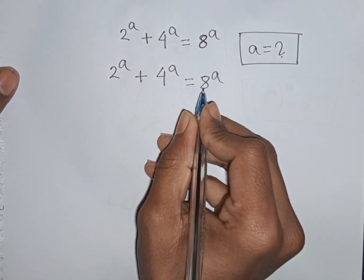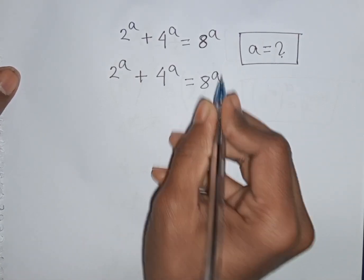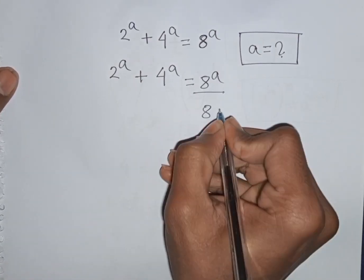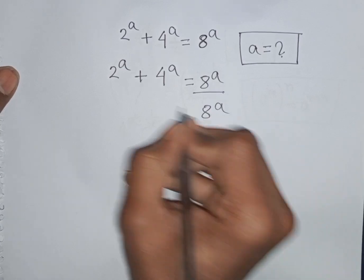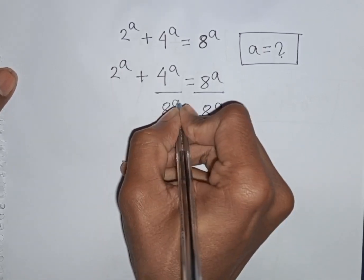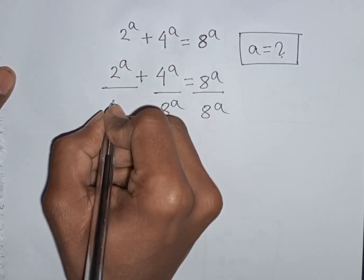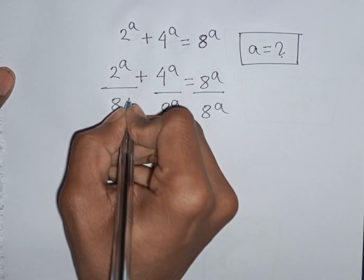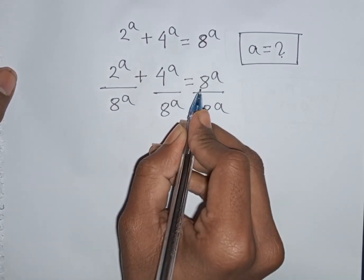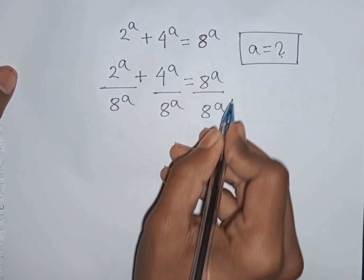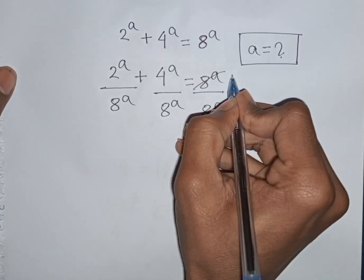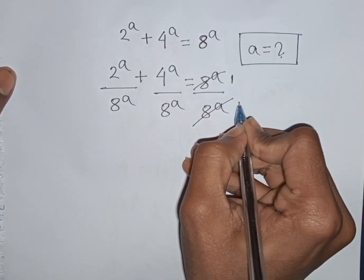Now we divide both sides by 8 power A. So divided by 8 power A on both sides. Now we see this 8 power A, this 8 power A will be cancelled.